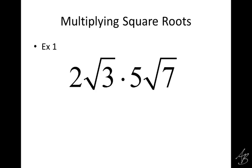It's not really complicated — it's not that tough. It's not like adding square roots where we have to have like terms. When we're multiplying two numbers that have square roots in them, they do not have to be like terms. We can multiply them together as they are.